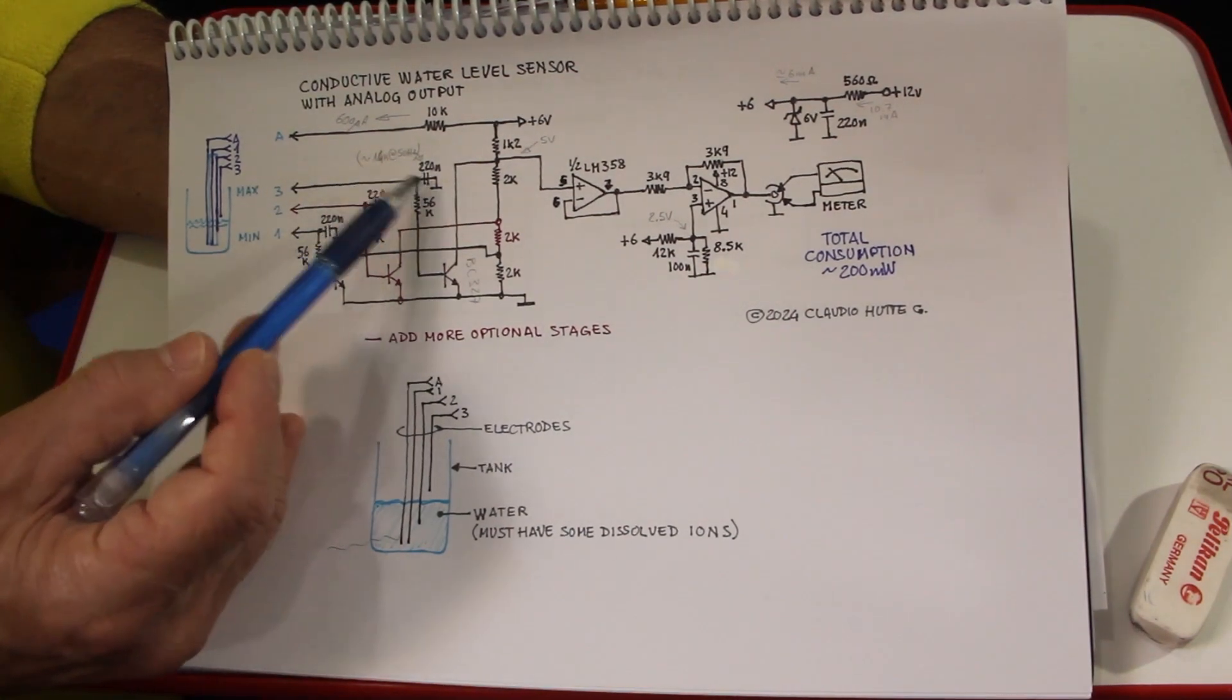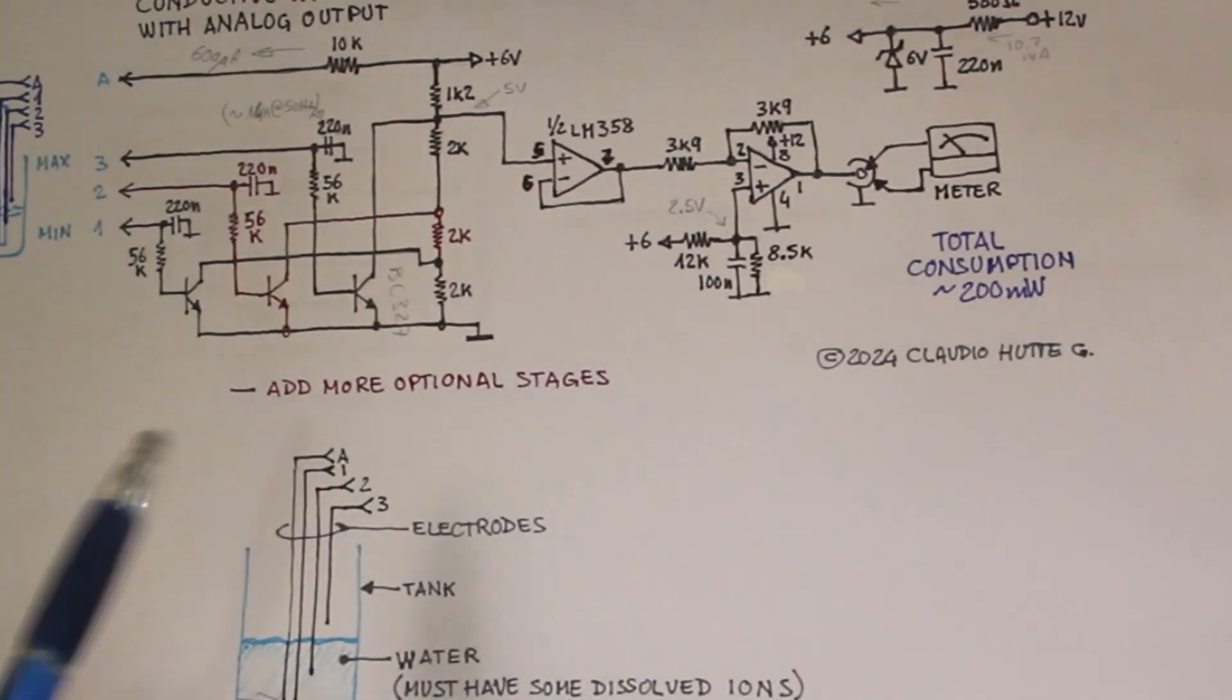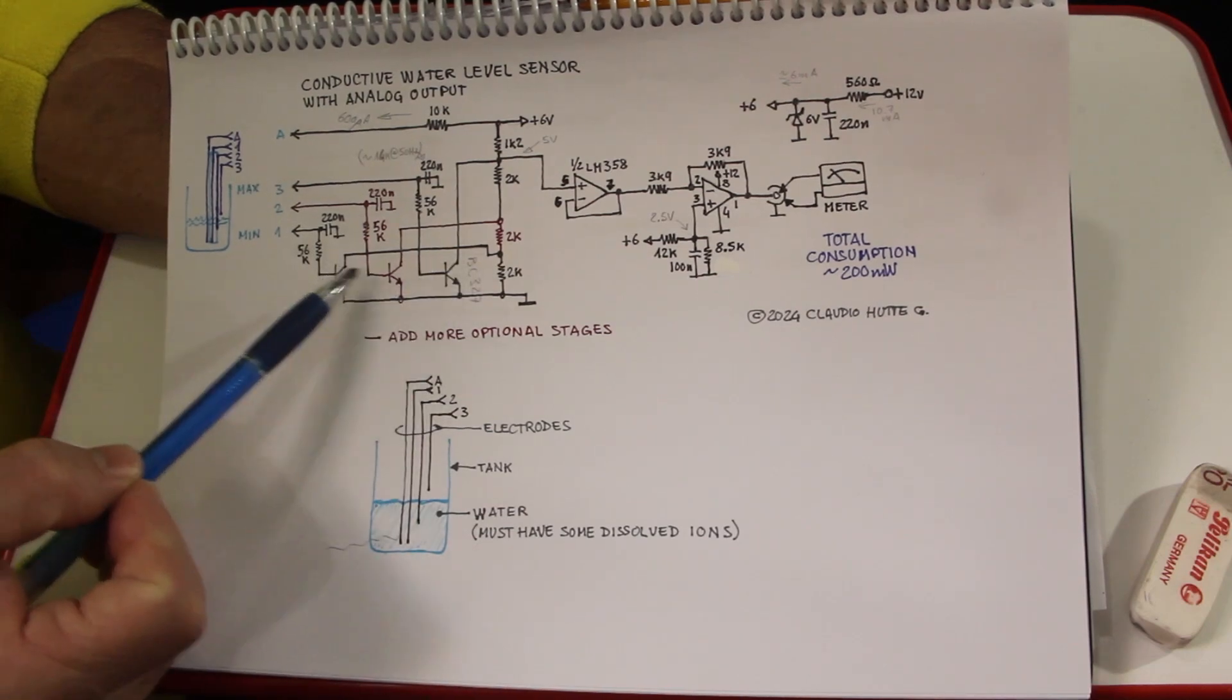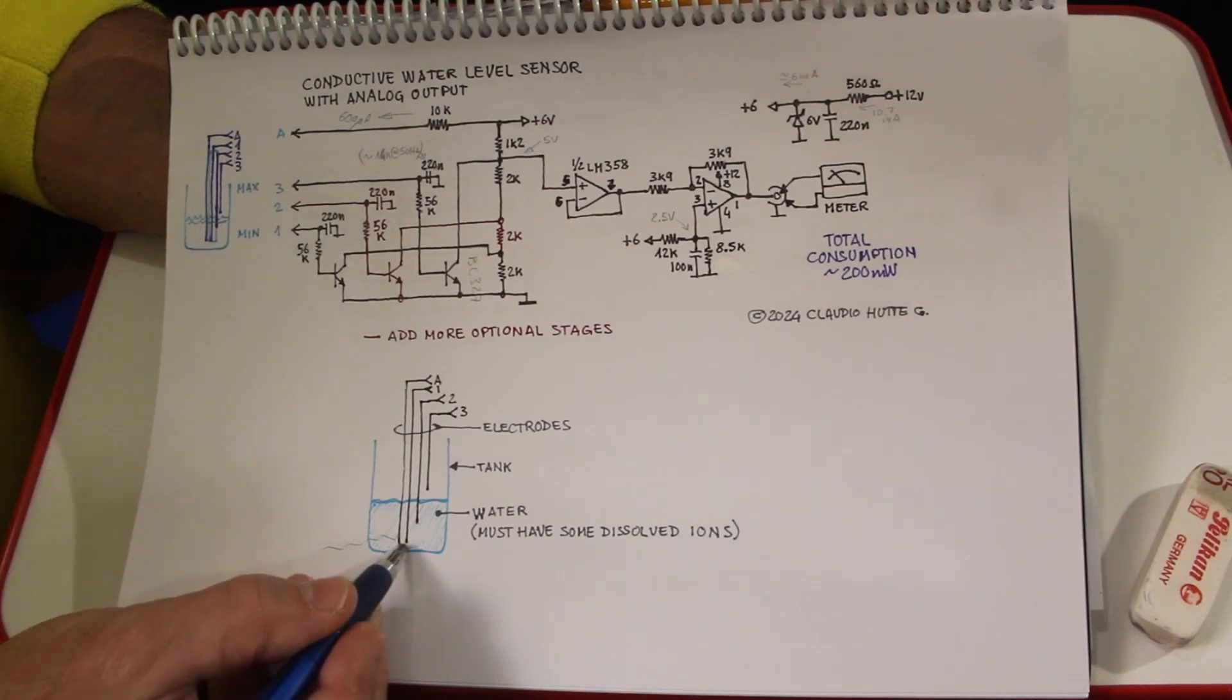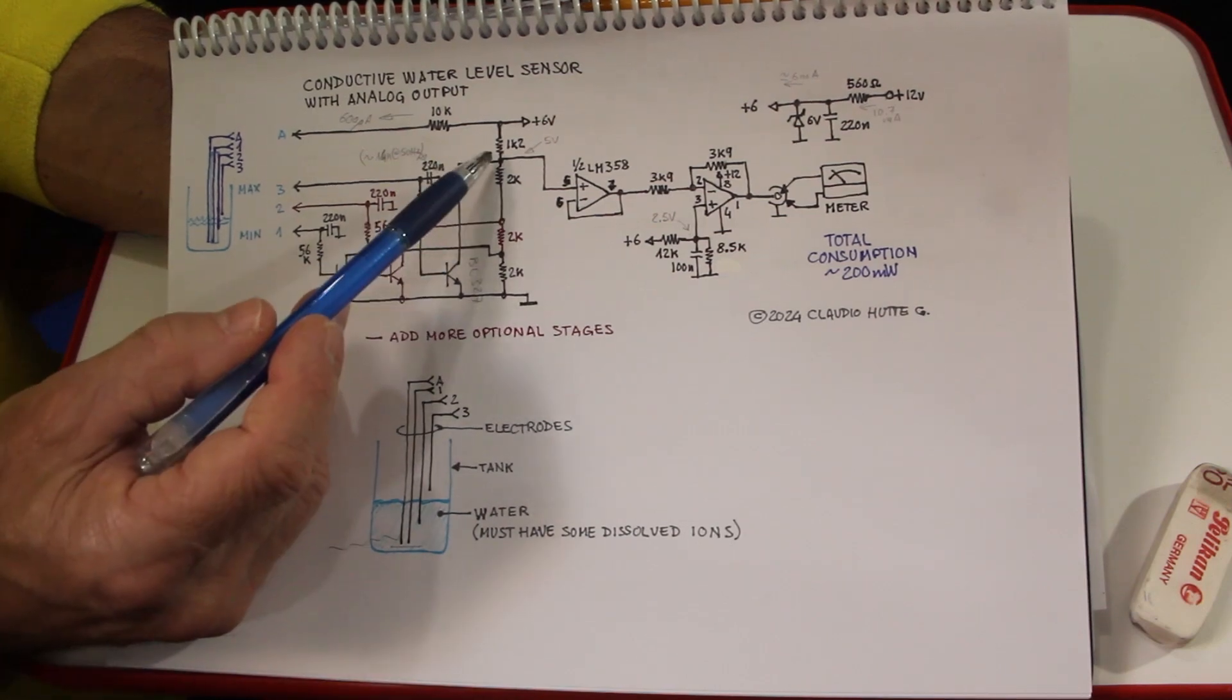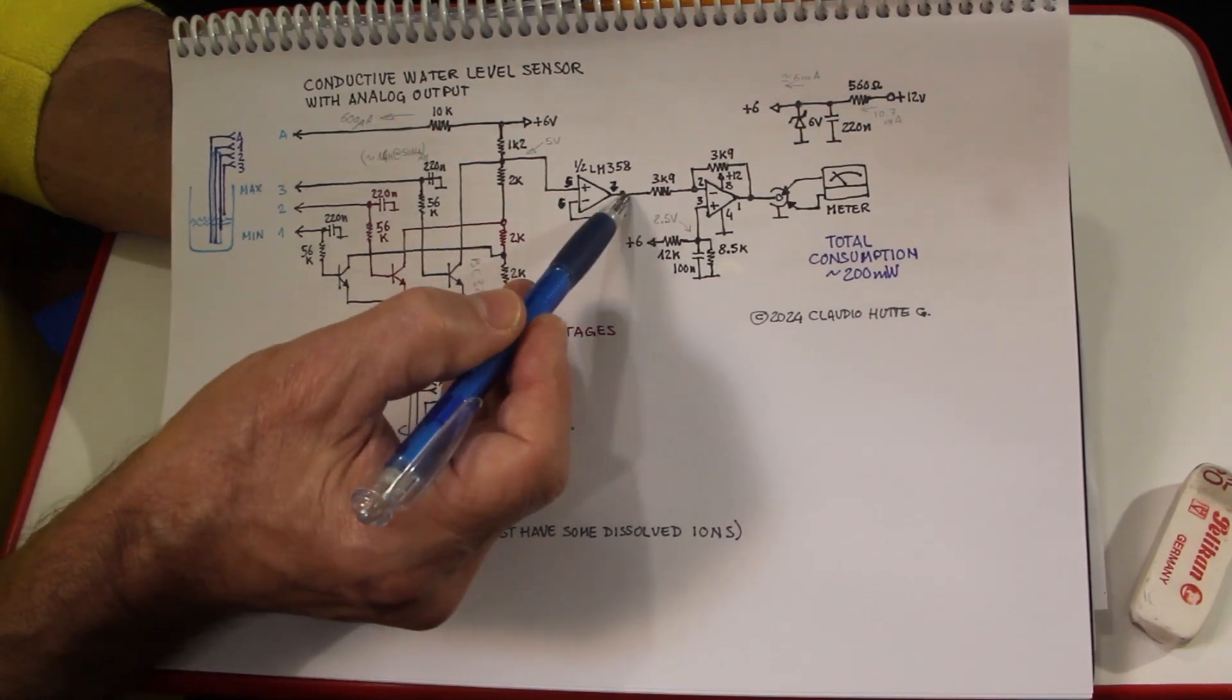And at 50 Hz, this capacitor has an impedance of 4 kOhm, more or less. When all these transistors are off, and therefore the water is below the minimum level here, here we have this ladder of resistors and that makes this point to reach 5V. So here we have 5V.